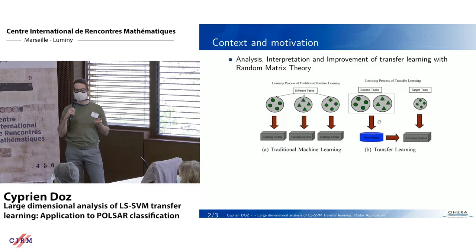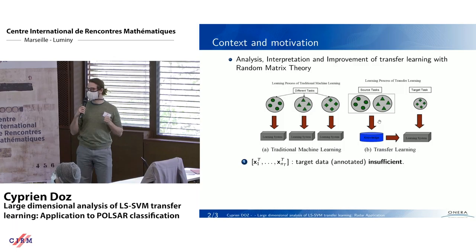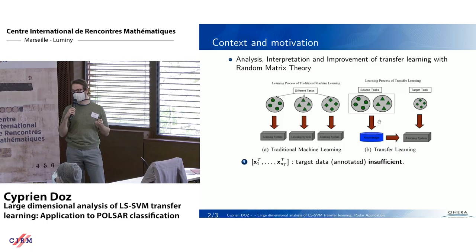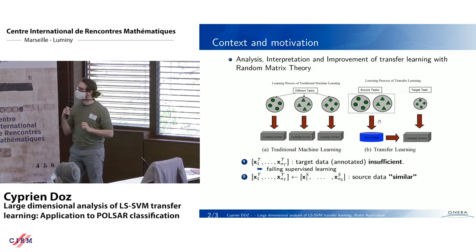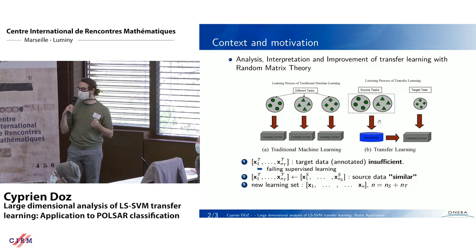We can analyze and interpret results and potentially improve them. We apply a transfer learning mechanism: instead of doing classical machine learning with separate tasks for each problem, we use eventual similarity between tasks to improve a target task that has insufficient annotated data — where we face failing supervised learning. We use similar source data to improve classification, and we merge the learning sets to improve performance. Finally, we can apply this to environmental monitoring and perform label optimization, which is possible thanks to our asymptotic results.